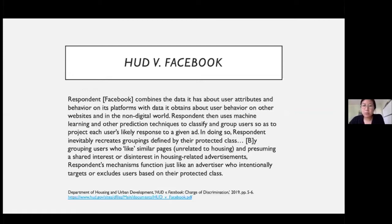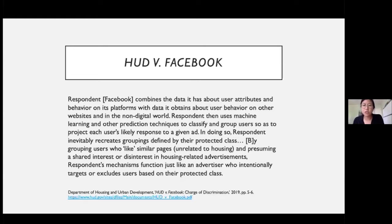Facebook then uses machine learning and other prediction techniques to classify and group users so as to project each user's likely response to a given ad. In doing so, Facebook inevitably recreates groupings defined by the protected class — by grouping users who like similar pages unrelated to housing and presuming a shared interest or disinterest in housing-related advertisements. Facebook's mechanism functions just like an advertiser who intentionally targets or excludes users based on their protected class.